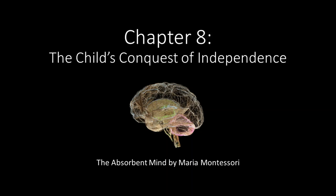Hey everyone, this is Teresa from Base 10 Montessori, and today we're going to go over Chapter 8 of The Absorbent Mind by Maria Montessori. Chapter 8 is titled The Child's Conquest of Independence. This is a fantastic chapter because we talk a lot about independence in Montessori, and the place where we often start that independence is in the practical life area.